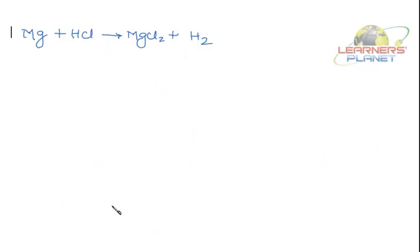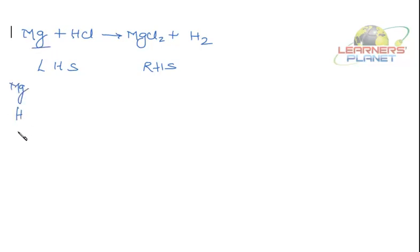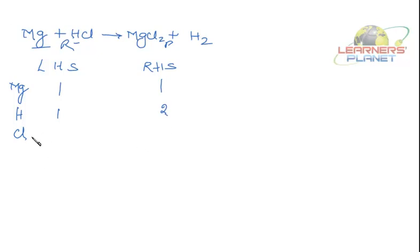Now let's take another example — magnesium plus HCl giving magnesium chloride plus hydrogen. Just compare the number of atoms: LHS and RHS. What all elements are there? Magnesium, hydrogen, chlorine. On the LHS side, number of atoms of magnesium is 1; on the RHS side, it's also 1. Number of atoms of hydrogen on LHS is 1, and RHS it's 2. Number of atoms of chlorine is 1 on LHS, but on the product side it's 2.